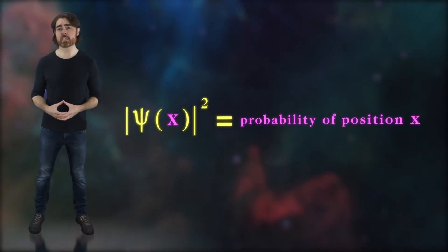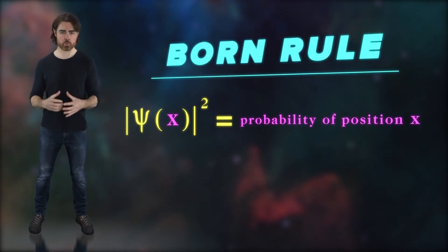To answer this, we need one more bit of physics, the interpretation of the wave function itself, known as the Born rule. The magnitude of the wave function squared is the probability distribution for the particle.